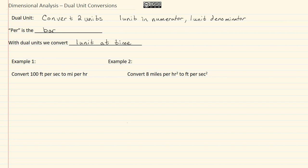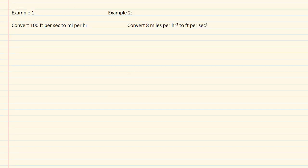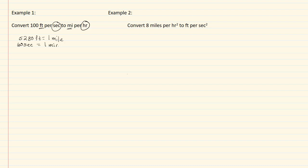Let's look at example one. We need to convert one hundred feet per second to miles per hour. First, let's get feet to miles — the conversion is five thousand two hundred and eighty feet equals one mile. Now we need to go from seconds to hours. We don't have a direct conversion, but we can go seconds to minutes: sixty seconds equals one minute, and sixty minutes equals one hour.